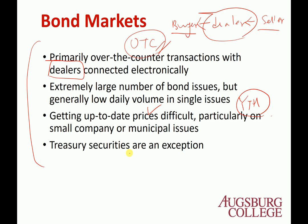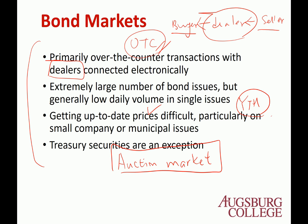Treasury securities are an auction market, so it's not a dealer's market. You actually have to participate in an auction. Unlike stocks, individual investors basically cannot access this market — you have to be a big institutional investor, such as a mutual fund or hedge fund. Usually, you can actually invest in bonds by purchasing a mutual fund that specializes in certain bonds.